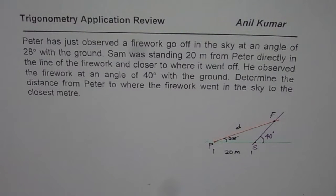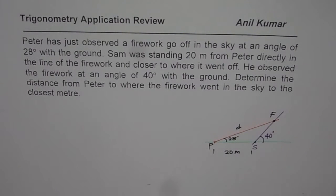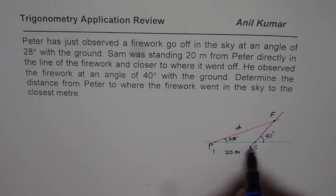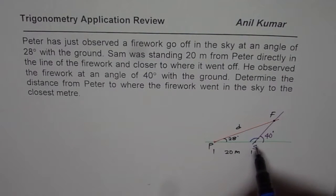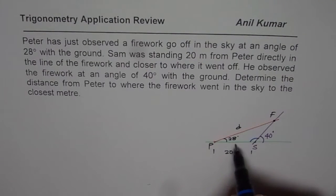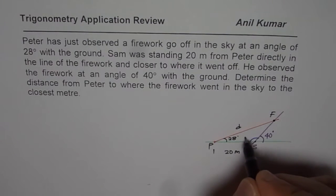From here, we can find the angles within the triangle. We know the 20-meter distance between P and S, so let us find angle S. This angle will be 180 degrees minus 40 degrees, which gives us 140 degrees.